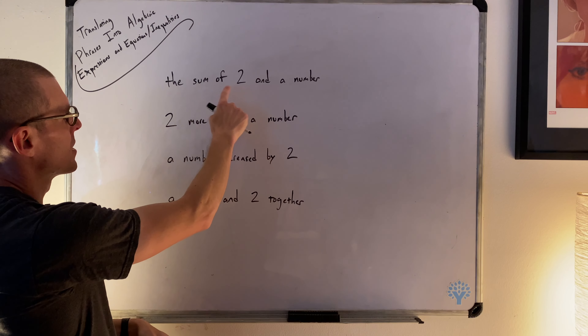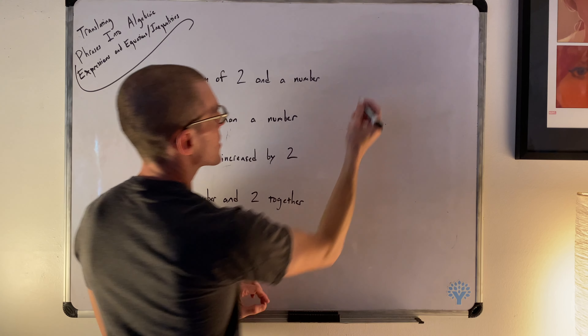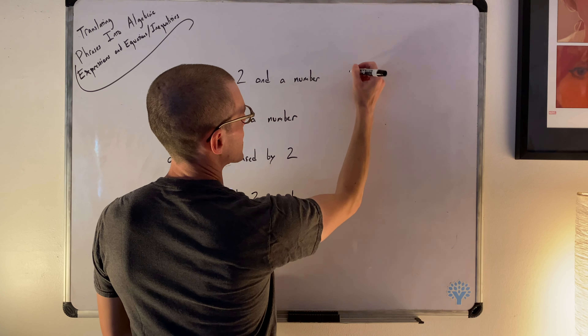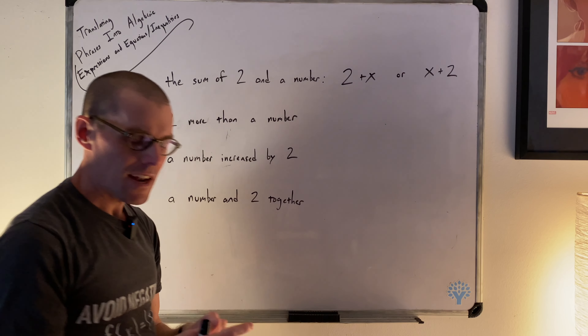What's the sum of two and a number? This means the result of adding things, so two and a number together is written as two plus x. The sum of two and a number is two plus x. You could also write it as x plus two. The reason they're equivalent isn't because of the language, but because of the commutativity of addition — when you add two things, the order doesn't change the result.